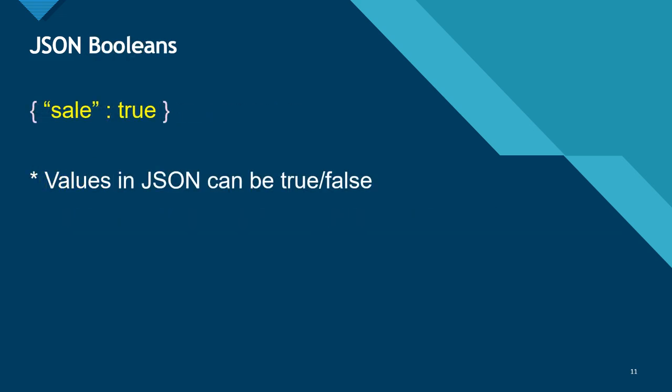JSON boolean means the value of a key is either true or false. And the value of the key can also be null.